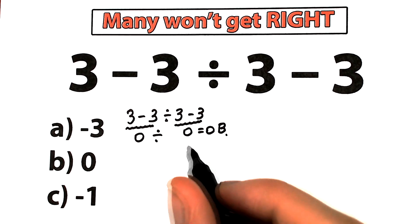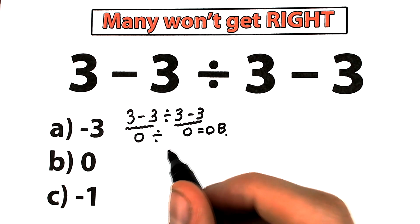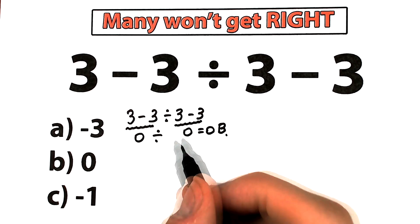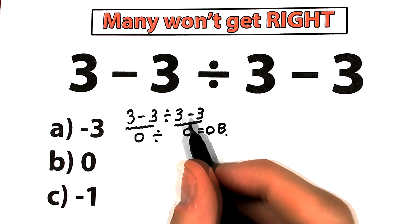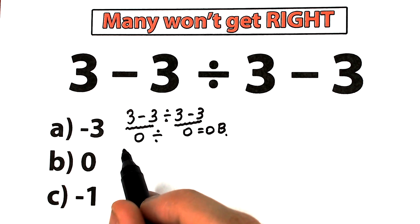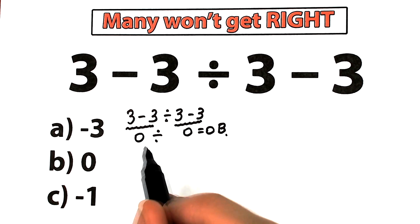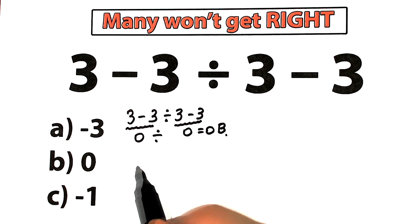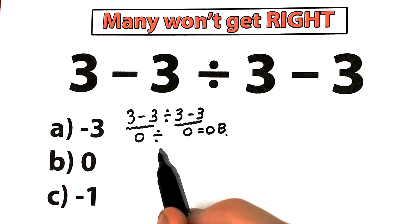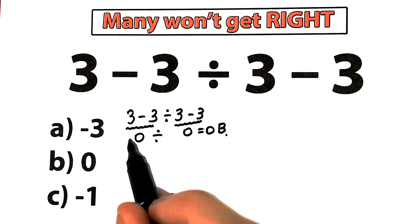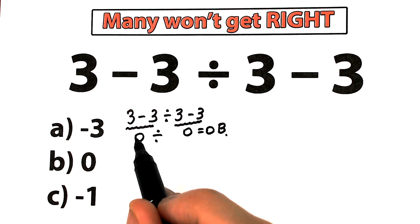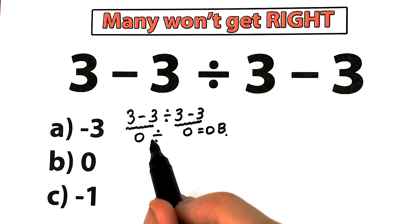But right now we need to understand that in math we should know about the order of operations, because that was a very chaotic solution — we jumped from left to right, and in terms of math this is absolutely incorrect, because we should know what is the correct order to do this problem. Obviously whatever order of operations we select is going to create a different answer, so we need to understand the correct order.